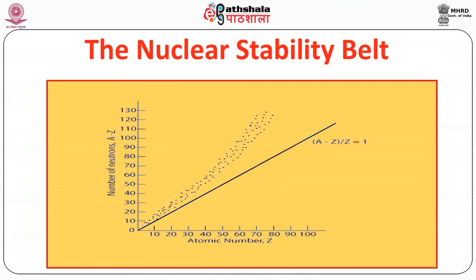We have been talking about nuclear stability. What is nuclear stability? There is a neutron-to-proton ratio. If the neutron-to-proton ratio is 1, the isotope is stable. But when there is a change in this ratio, the nucleus is unstable. Either a neutron converts to a proton or a proton converts to a neutron, and the unstable nucleus comes to a stable state. This graph is called a nuclear stability belt, which we always see in radioactivity textbooks.